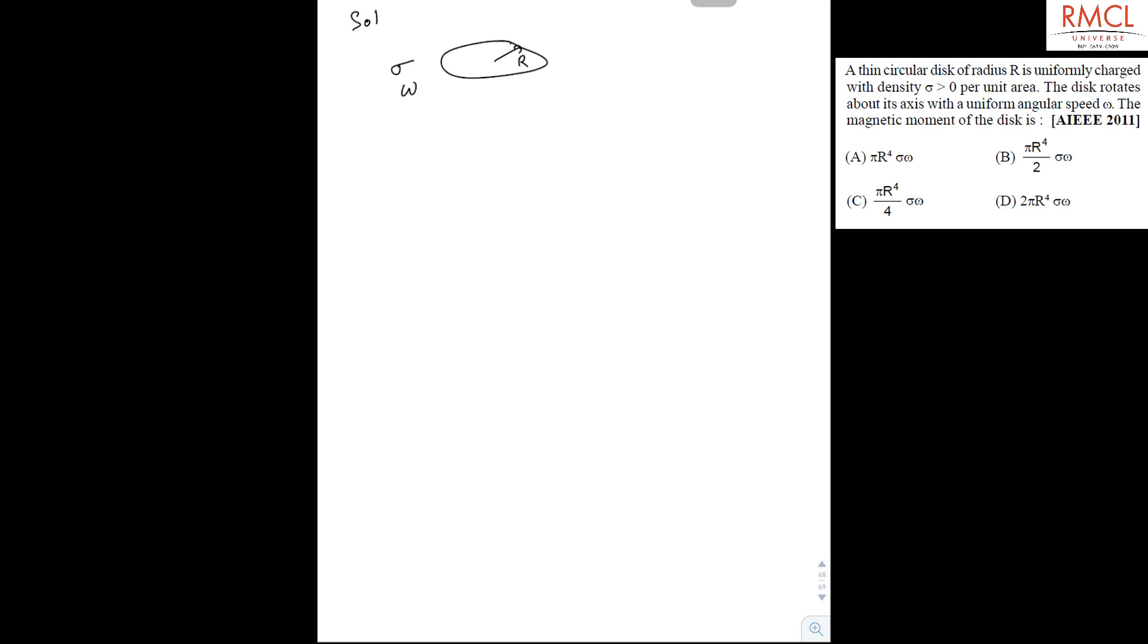The magnetic moment can be found like this. Suppose there is a small ring of radius small r and thickness dr. If we find the magnetic moment of this small ring and integrate it from 0 to radius R, then we can find the total magnetic moment of this disk.